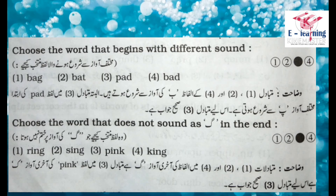Question number 3: Choose the word that begins with a different sound. مختلف آواز سے شروع ہونے والا لفظ منتخب کیجیے۔ Options: bad, bad, bad, bad. Explanation: متبادل ایک، دو اور چار کے الفاظ 'b' کی آواز سے شروع ہوتے ہیں۔ البتہ متبادل تین میں لفظ 'pad' کی ابتدا مختلف آواز سے شروع ہوتی ہے، اس لیے متبادل تین ہی صحیح جواب ہے۔